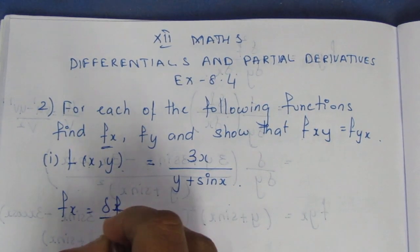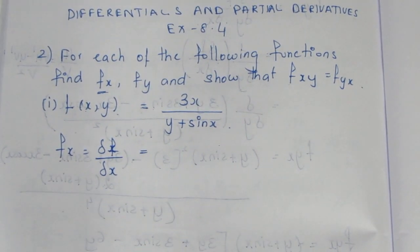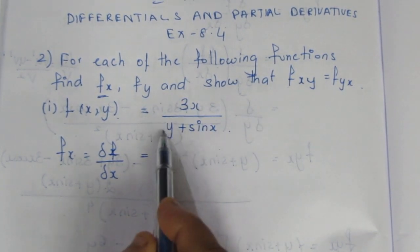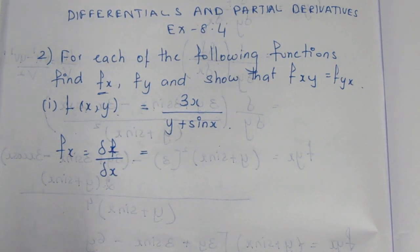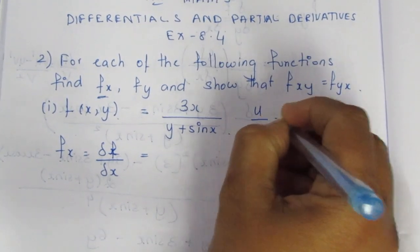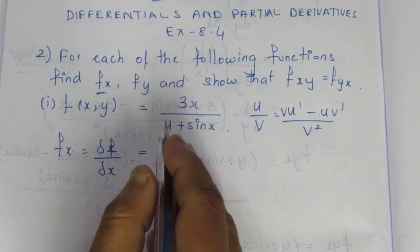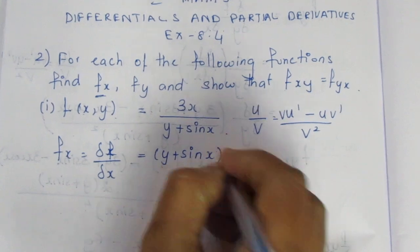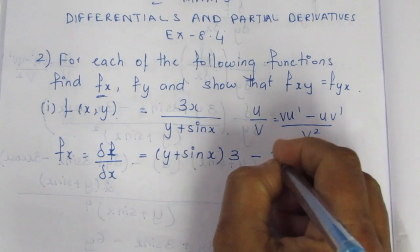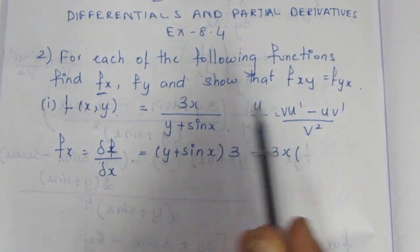f of x means do f by do x — differentiate with respect to x. Here y is treated as a constant number. Using the quotient rule (u by v rule): the numerator is 3x, differentiate 3x. The denominator y plus sin x — y is constant, giving 0, plus sin x differentiates to cos x.